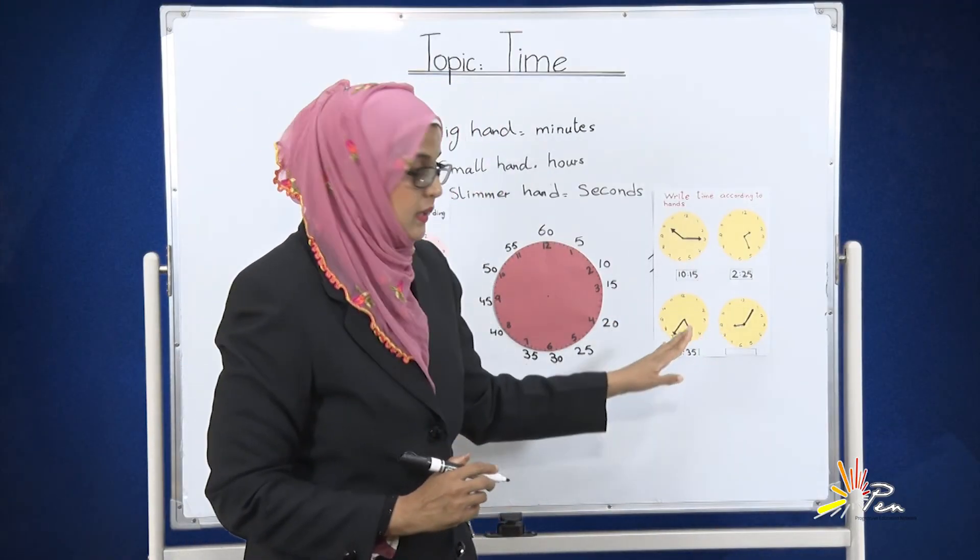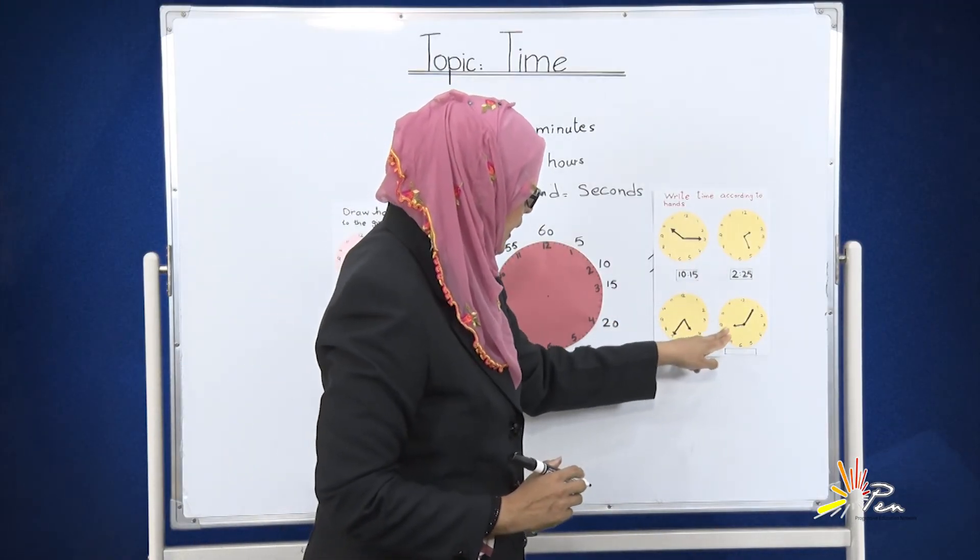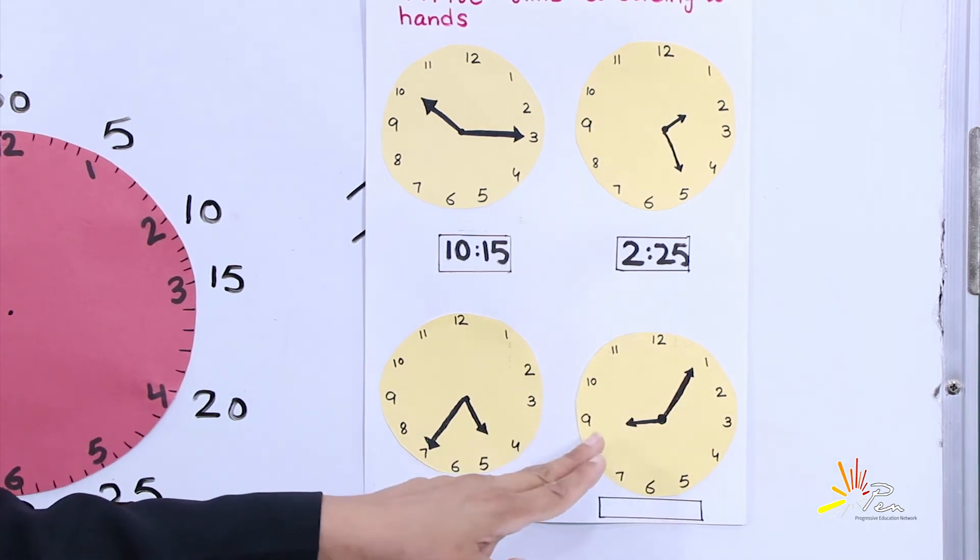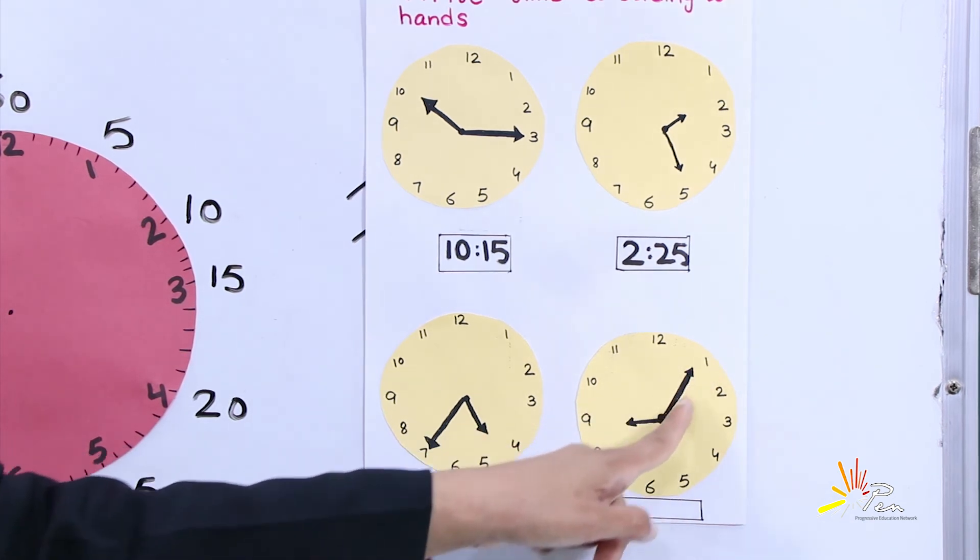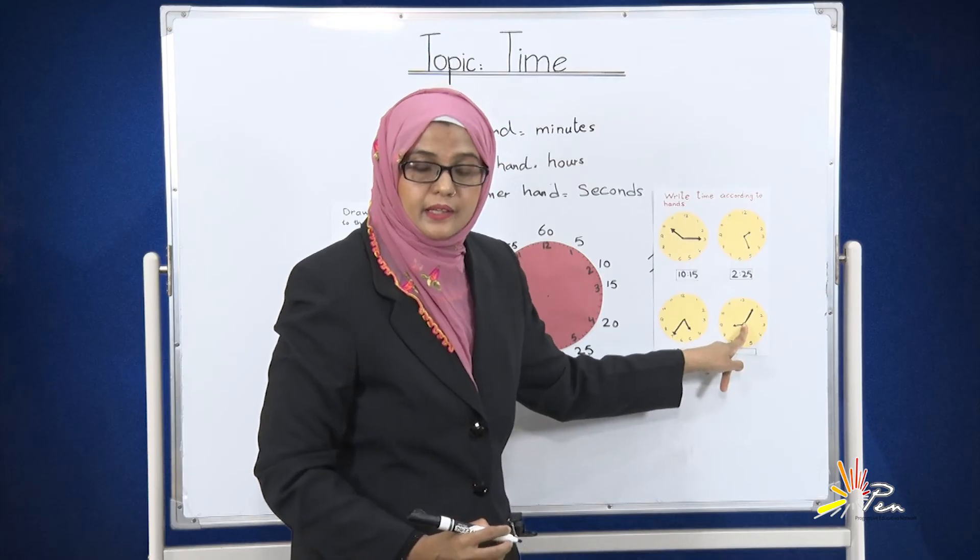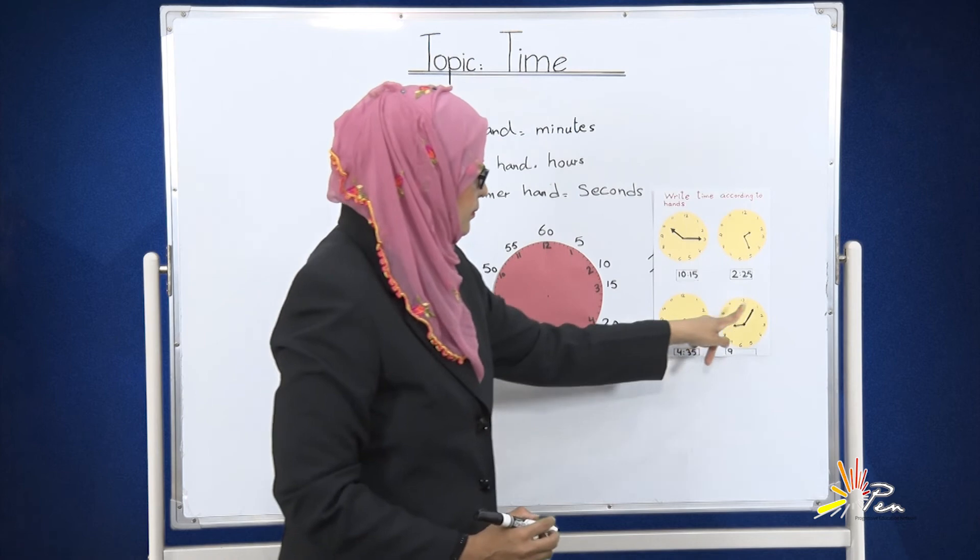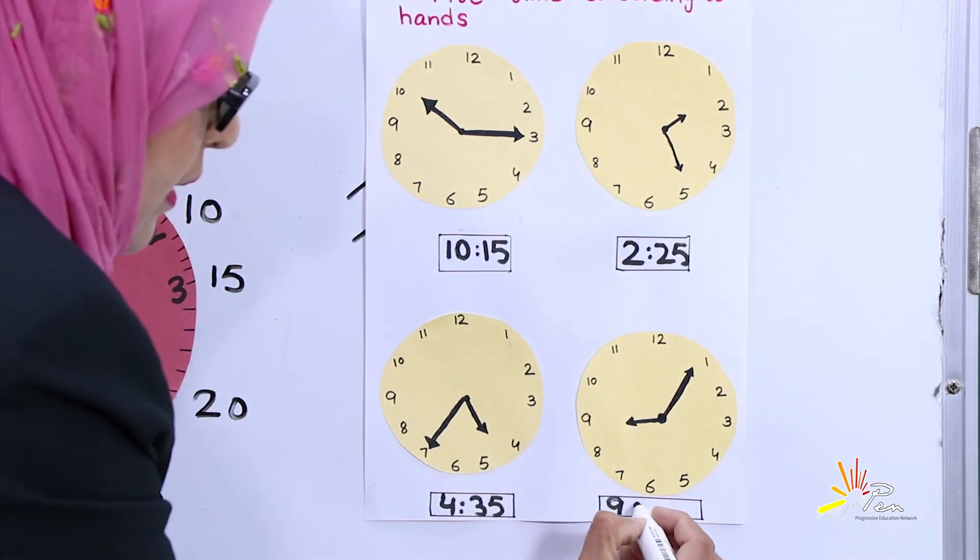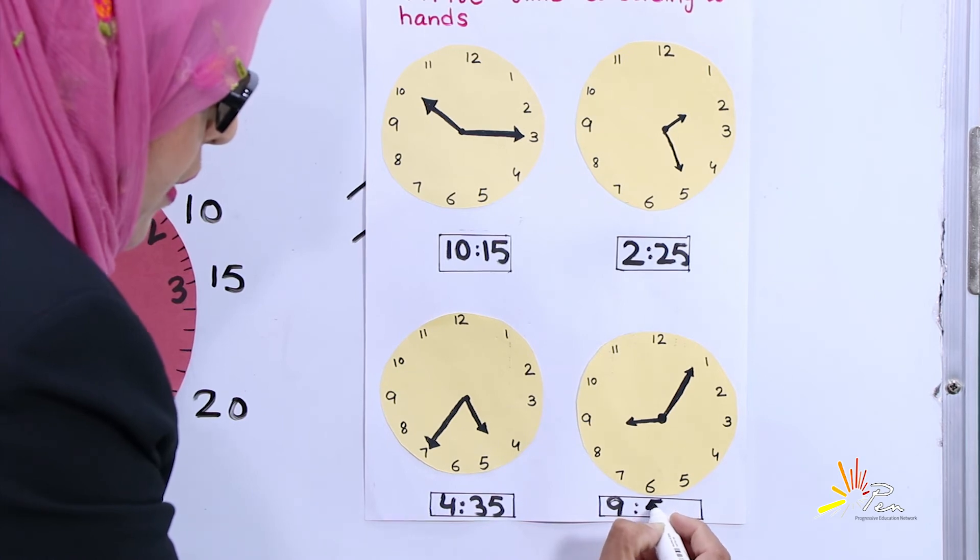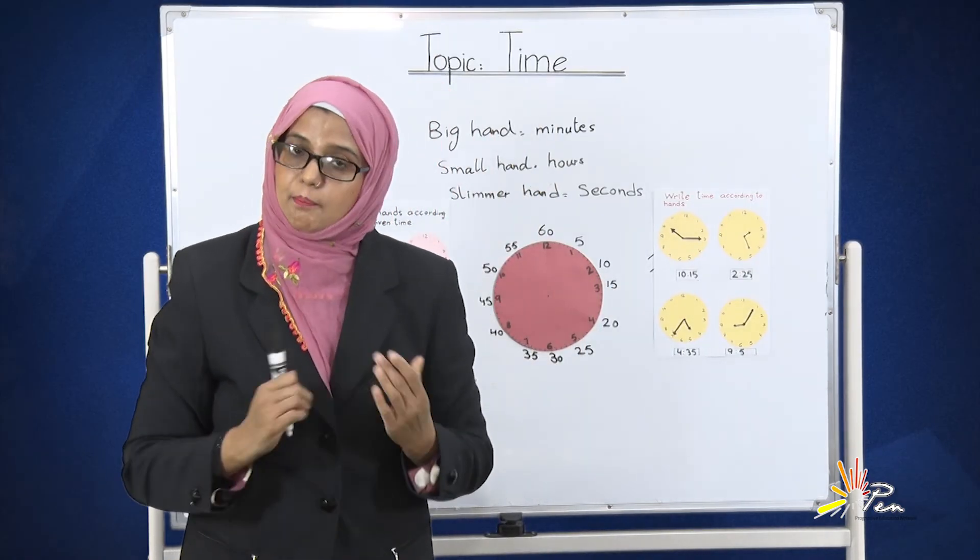Okay, the last clock tells us the time 9 and 1. 9. The number 1 is the bigger hand. How do we learn this? 5 ones are 5, only 5. It means 9:05. 9 hours and 5 minutes.